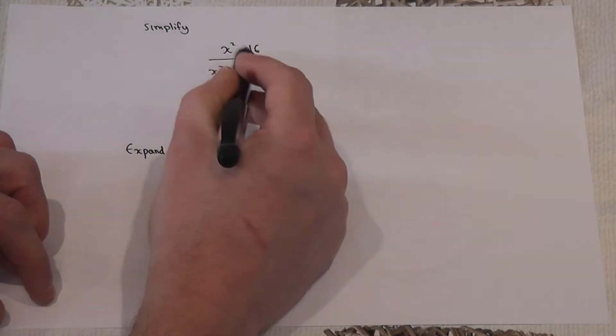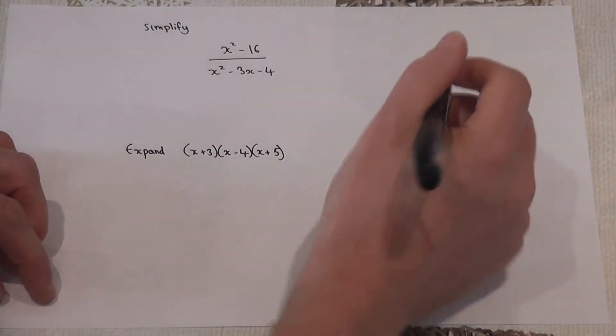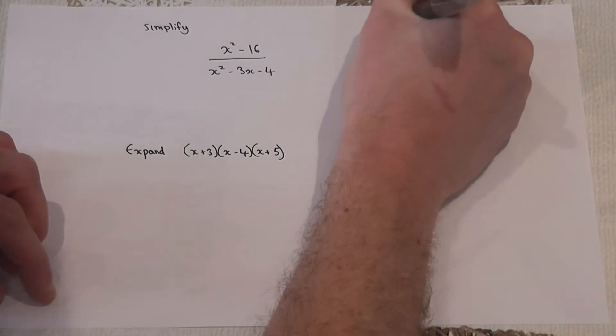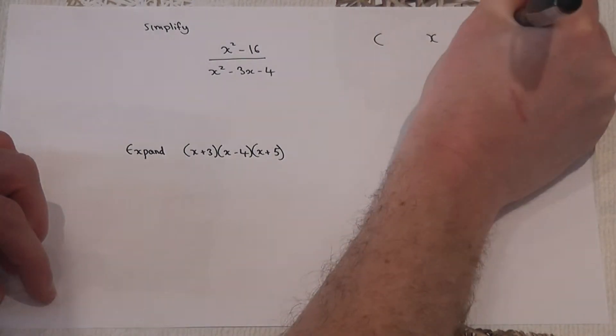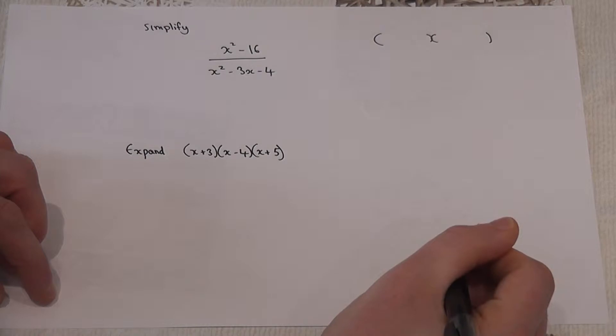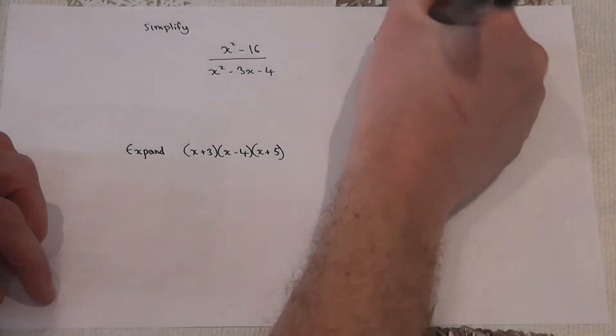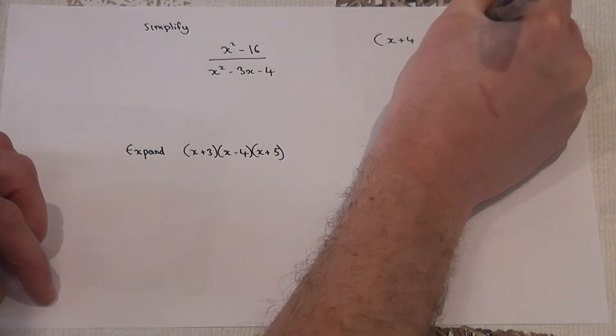At the top of this fraction, you're going to find two brackets which expand to give x squared minus 16. Now the factors of minus 16 are plus 4 and minus 4. So the top actually becomes x plus 4 and x minus 4.